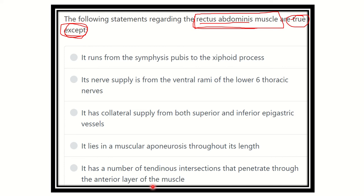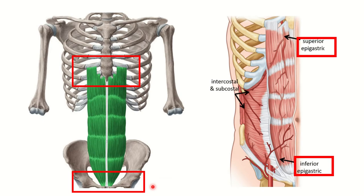We have to find out one option which is not compatible with the rectus abdominis muscle — that means which information is not true regarding the rectus abdominis muscle. So first of all we have to know details about the rectus abdominis muscle. Here we can see this is the rectus abdominis muscle.